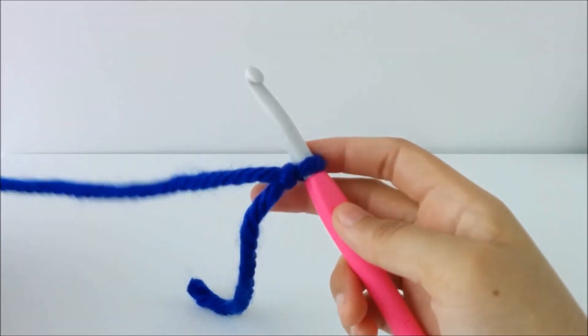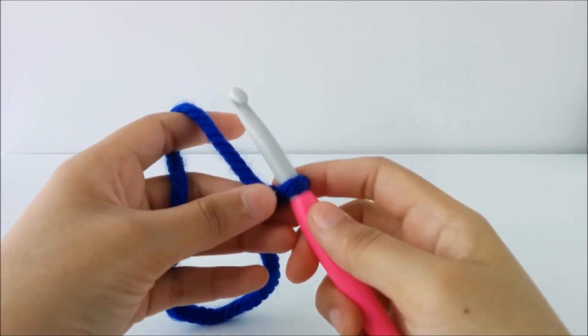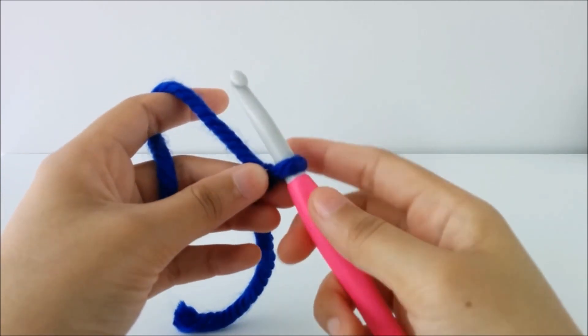Okay, so now let's make a foundation chain. The foundation chain is the first row that you work into and it looks a lot like a braid. It's really really simple to do.